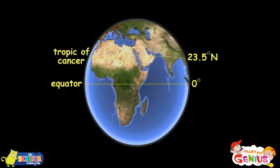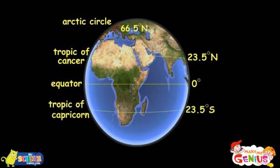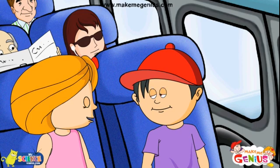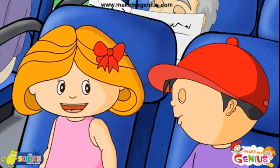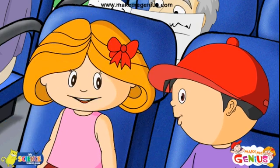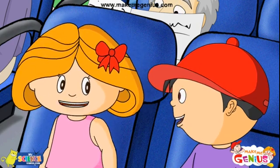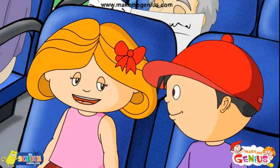You are absolutely right. Do you know at what degree they lie? The Tropic of Cancer is 23 and a half degrees north of the equator, and the Arctic Circle is 66 and a half degrees north of the equator. The Tropic of Capricorn is 23 and a half degrees south. You are a fast learner! I will tell you an interesting fact. The regions of earth in between the Tropic of Cancer and Tropic of Capricorn are called the tropics and are known for hot temperatures and dense forests.